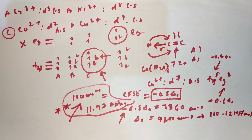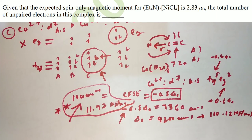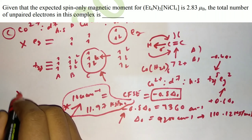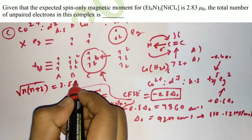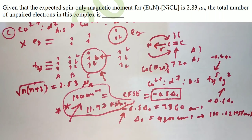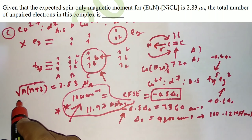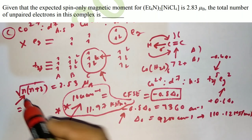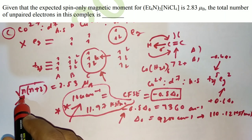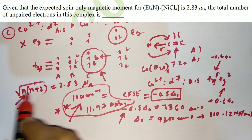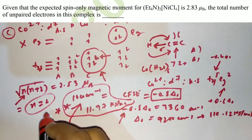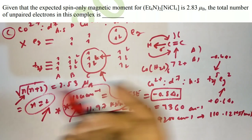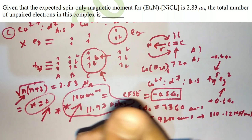The next question asks for the spin-only magnetic moment of Ni(CO)4. Using the formula √(n(n+2)) = 2.83 μB, you find n = 2 unpaired electrons. You can verify this from the electronic configuration of the system shown on screen.